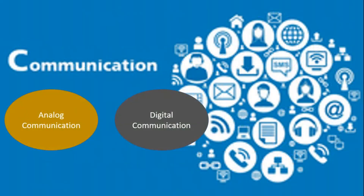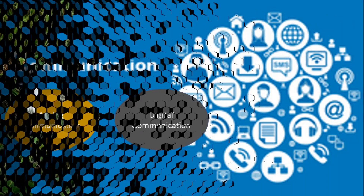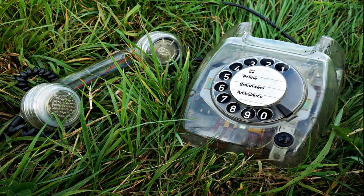Welcome to StudyTube. Communication systems can be broadly classified into two categories: analog communication systems and digital communication systems. We have already discussed analog communication in our previous videos. If you have not seen those yet, I will provide links in the description.